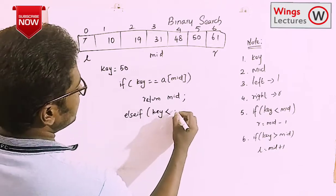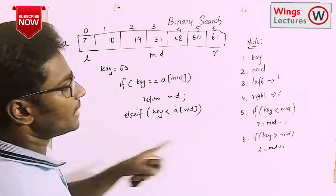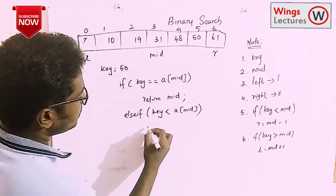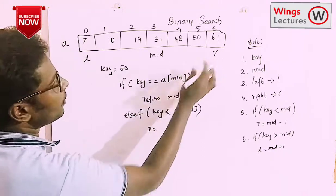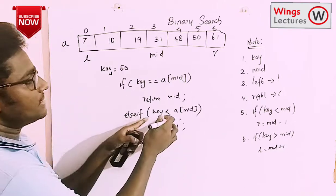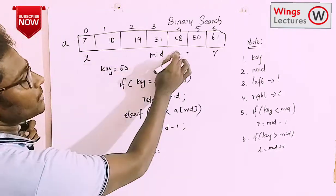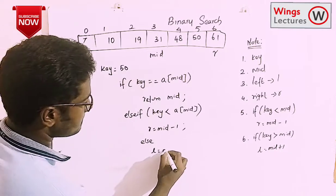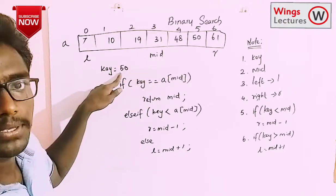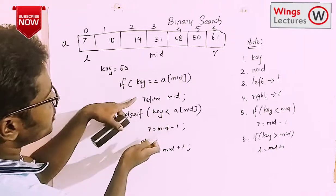If key is less than mid value, we set R = mid − 1. If key is greater than mid value, we change the left pointer to mid + 1. Now let's apply this to our example — searching for 50 from the given array as per these conditions.